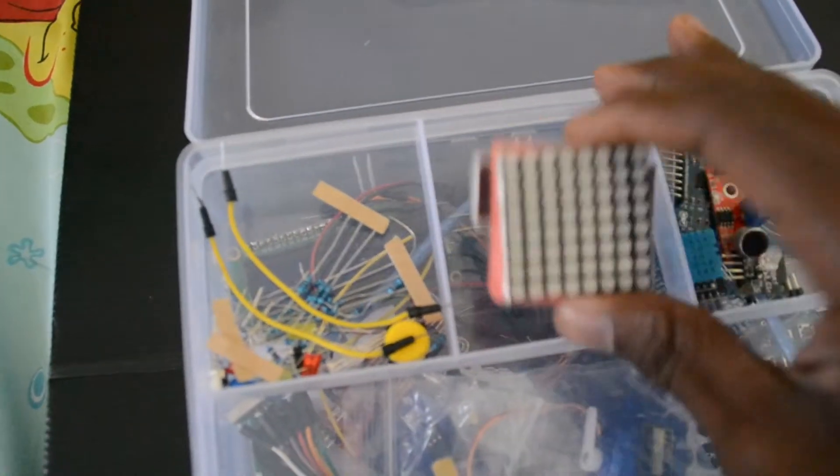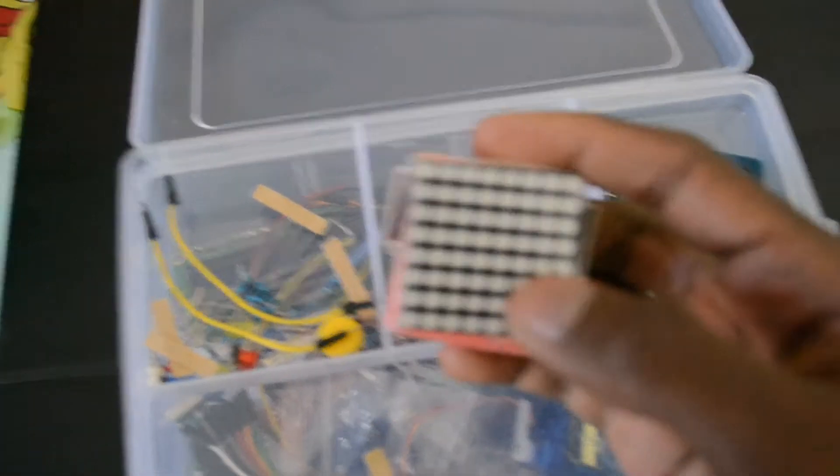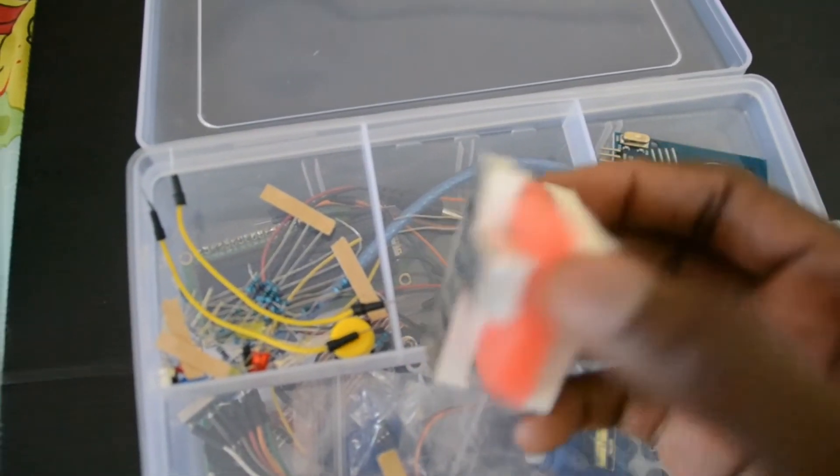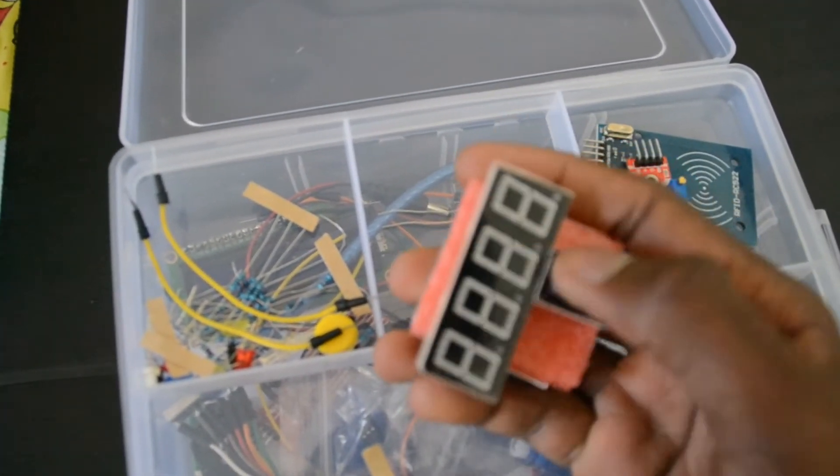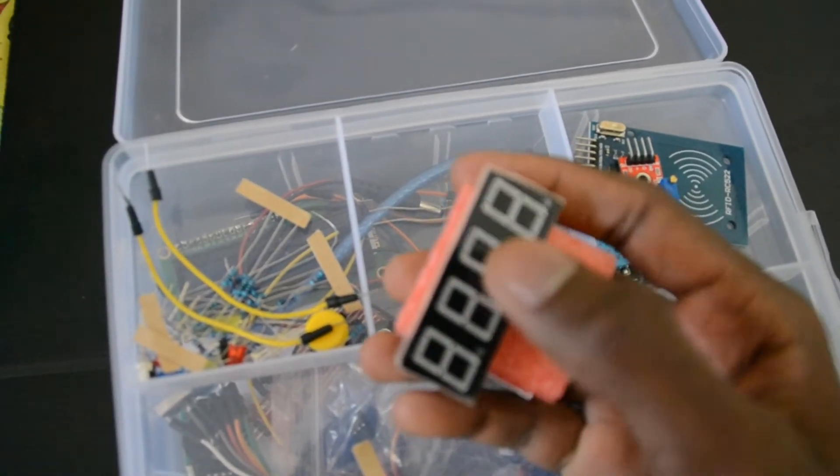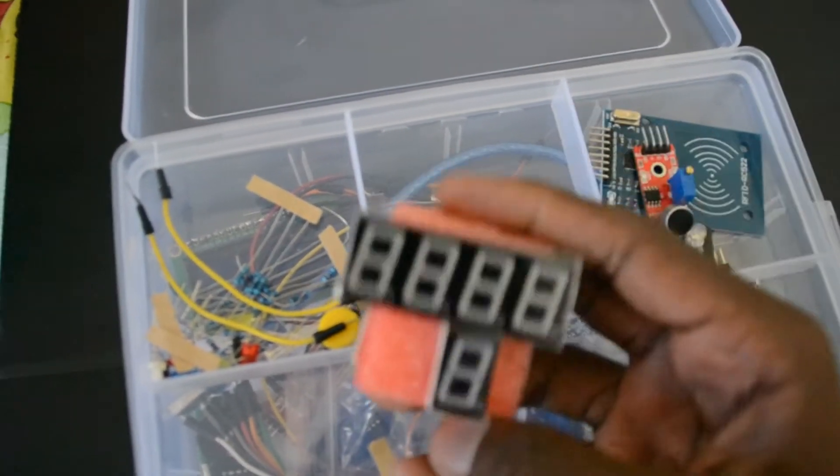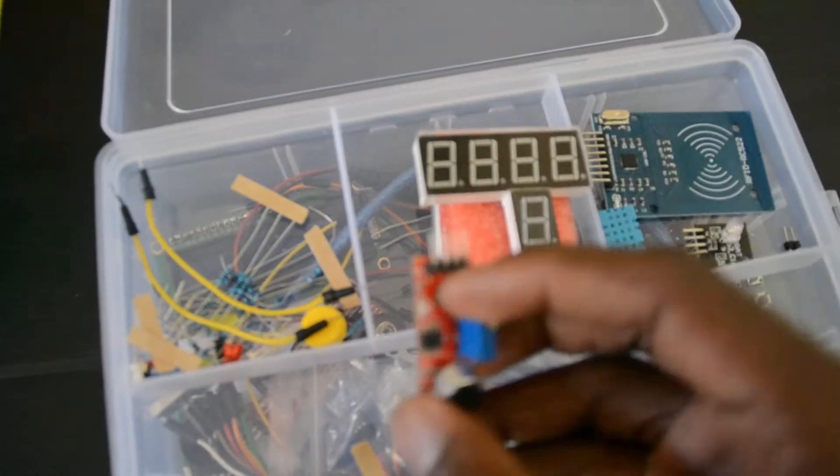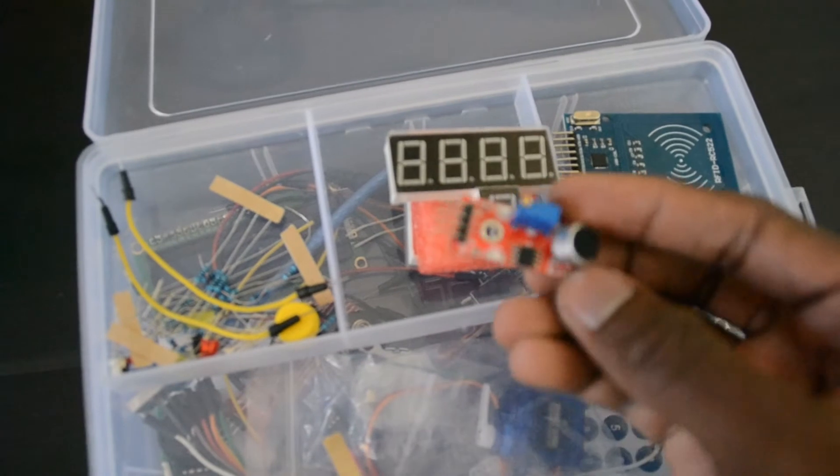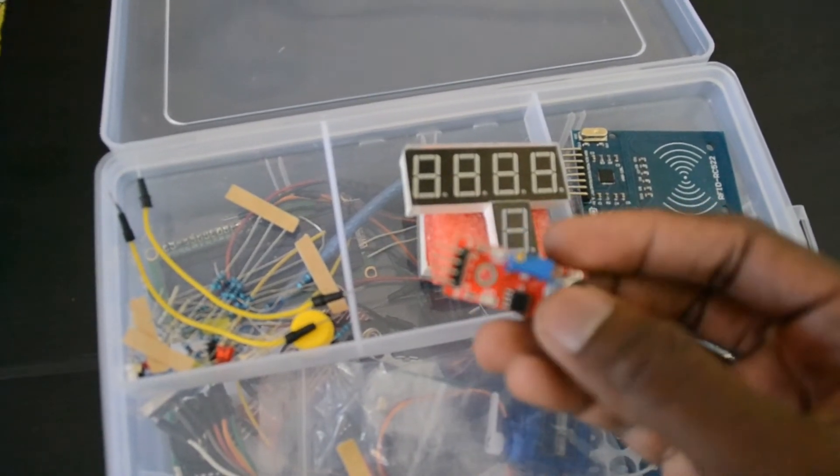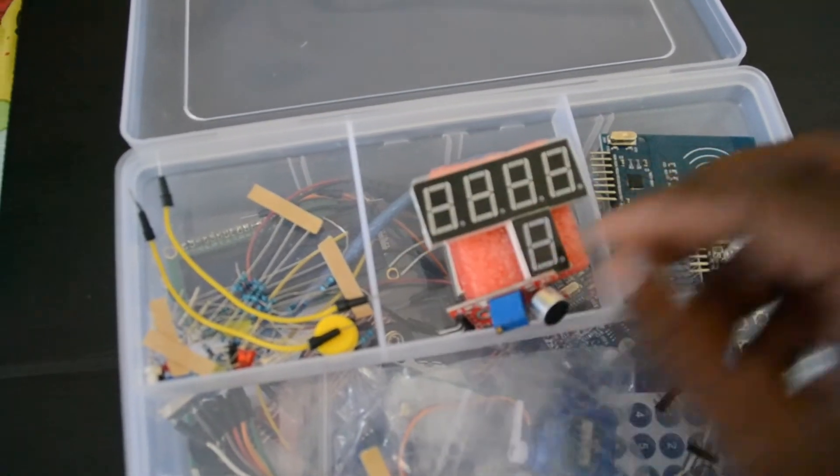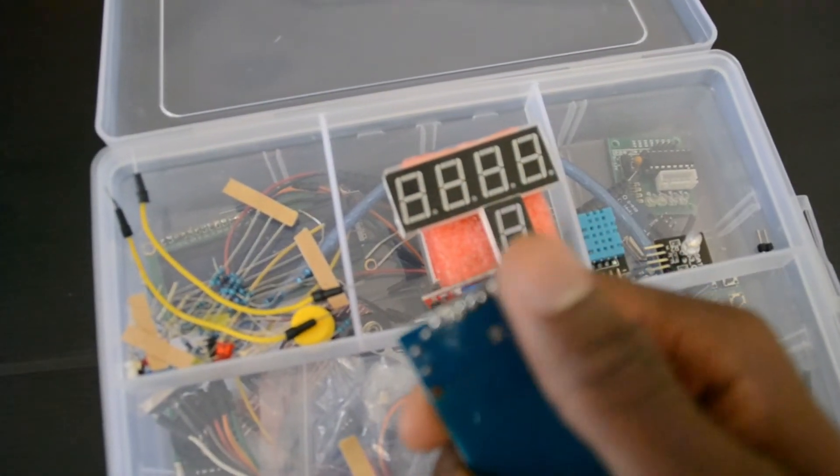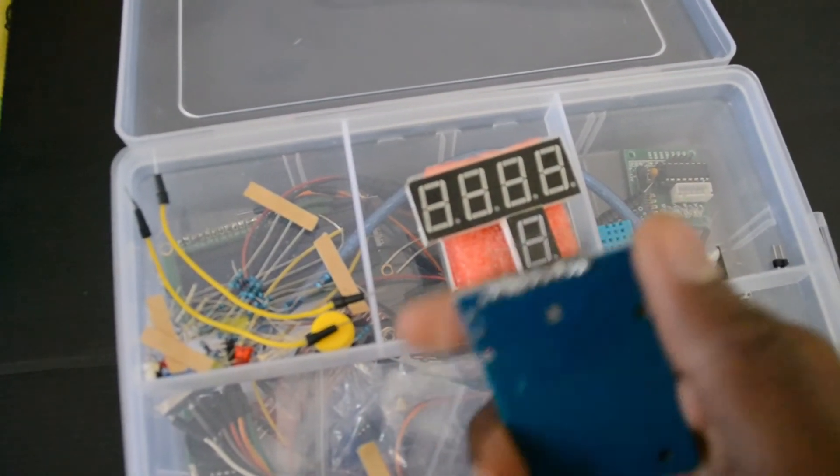I have a matrix display. I didn't test it yet, but these two seven segment displays work. The sound sensor worked also. The downside of this kit is that this came unsoldered. I had to solder it by myself.